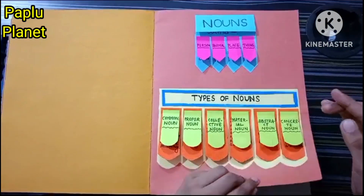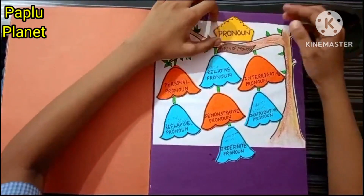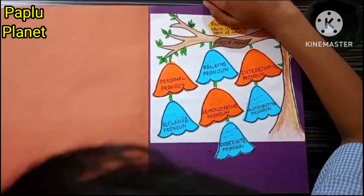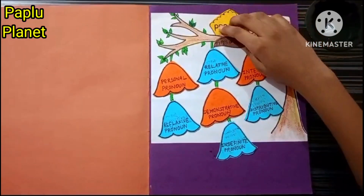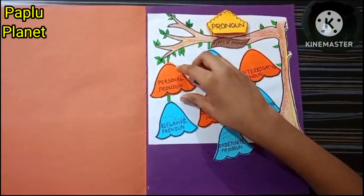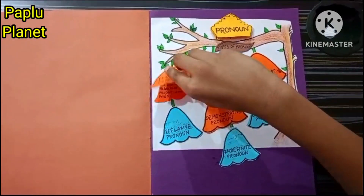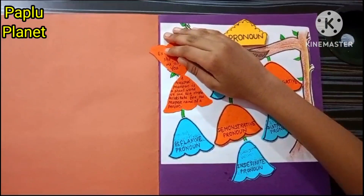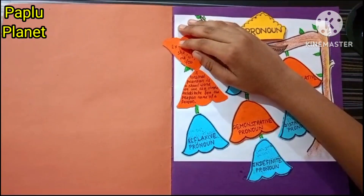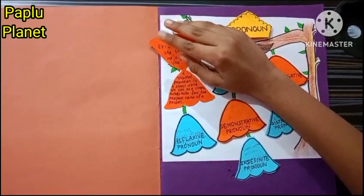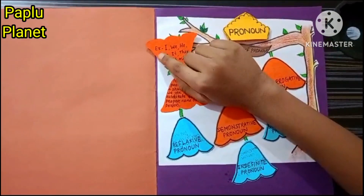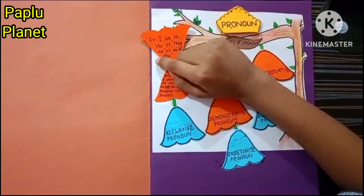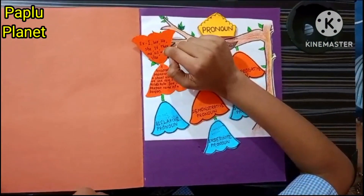Let's move to our next project which is pronouns. What is the definition of pronouns? A pronoun is a word which is used in the place of a noun. Types of pronoun. Personal pronoun: a personal pronoun is a short word we use as a simple substitute for the proper name of a person. Examples: I, we, he, she, it, they, me, us, mine and you.